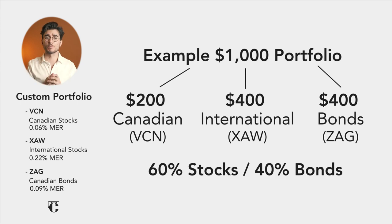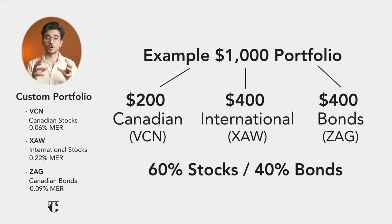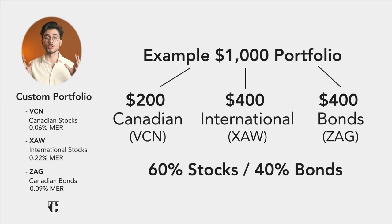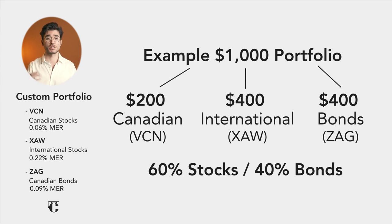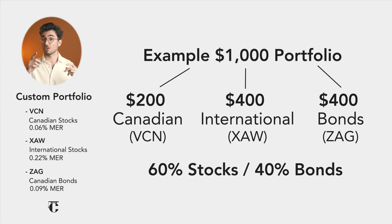With these three funds you can construct your portfolio to be globally diversified with full control over your asset allocation. For example, you could go 20% Canadian stocks, 40% international stocks, and 40% bonds — giving you 60% in the global stock market and 40% in bonds. The customization lets you choose the exact proportions going to Canada versus the rest of the world. The trade-off is that you'll have to place trades for three different funds and manage their balance. One option is super easy — set it and forget it — while the other requires a little more setup and maintenance. In the end, performance should be very similar, and what really determines performance is your asset allocation.